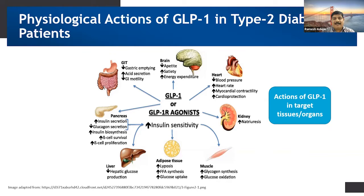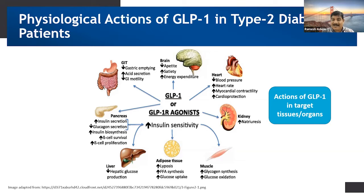Focusing on the pancreas, GLP-1 receptor agonists enhance insulin biosynthesis, beta-cell survival, and beta-cell proliferation. On the liver, it decreases hepatic glucose production. On adipose tissue, it enhances lipolysis, fatty acid synthesis, and glucose uptake. On muscle, it enhances glycogen synthesis and glucose oxidation. On the kidney, it increases natriuresis.